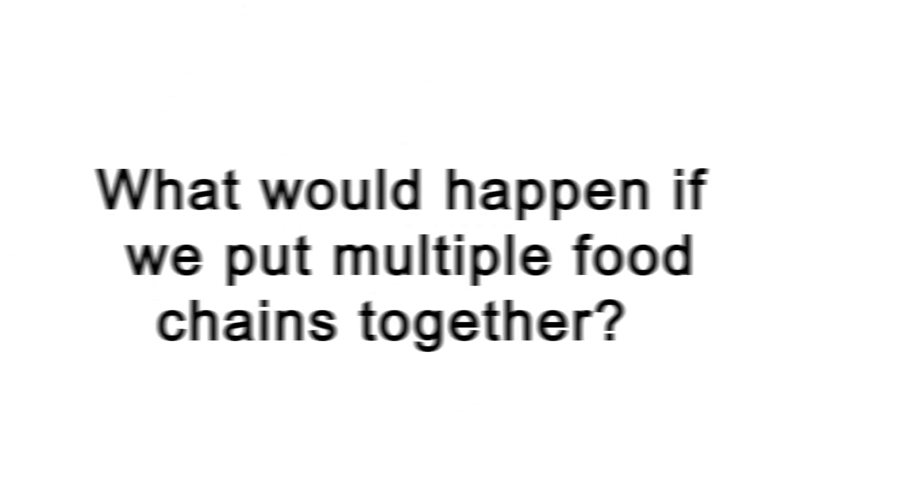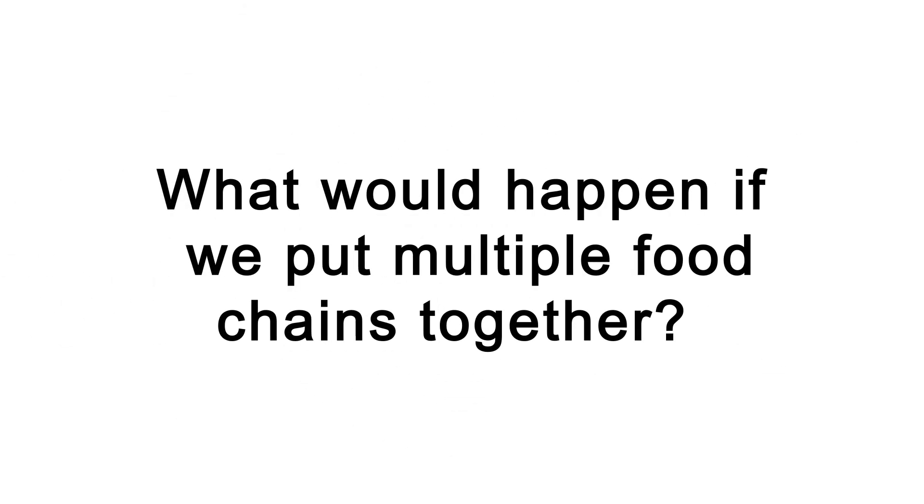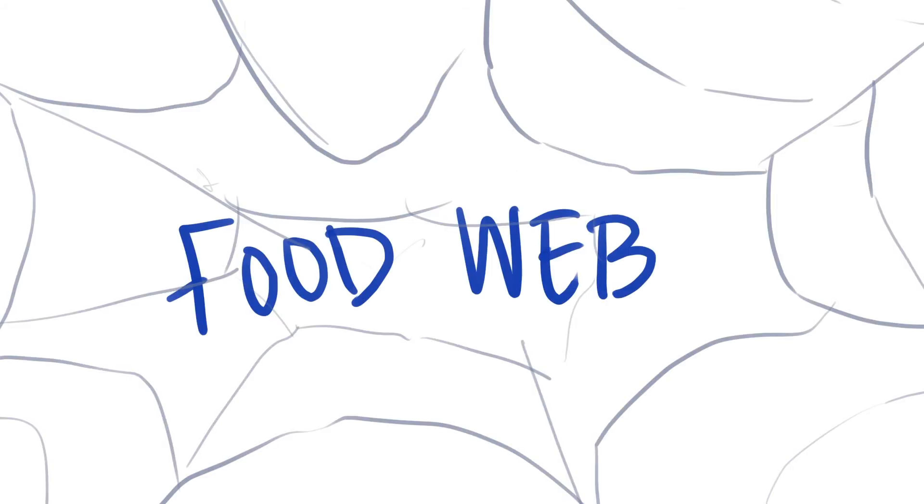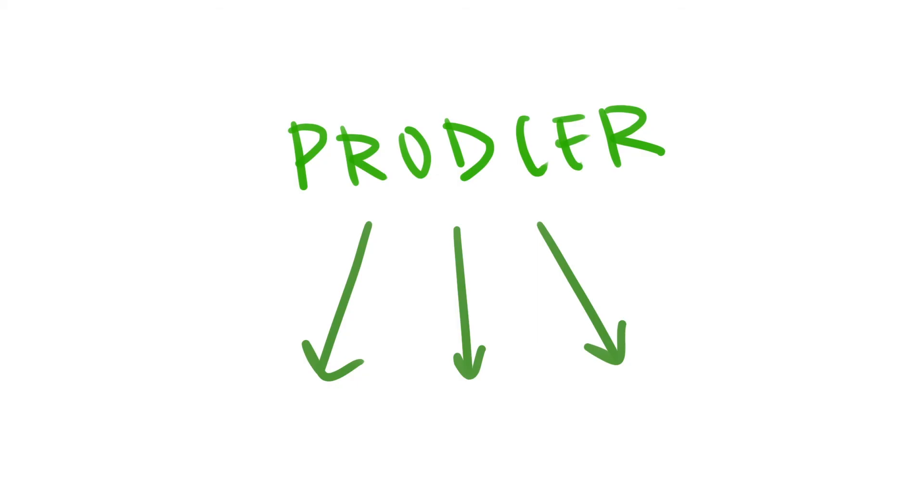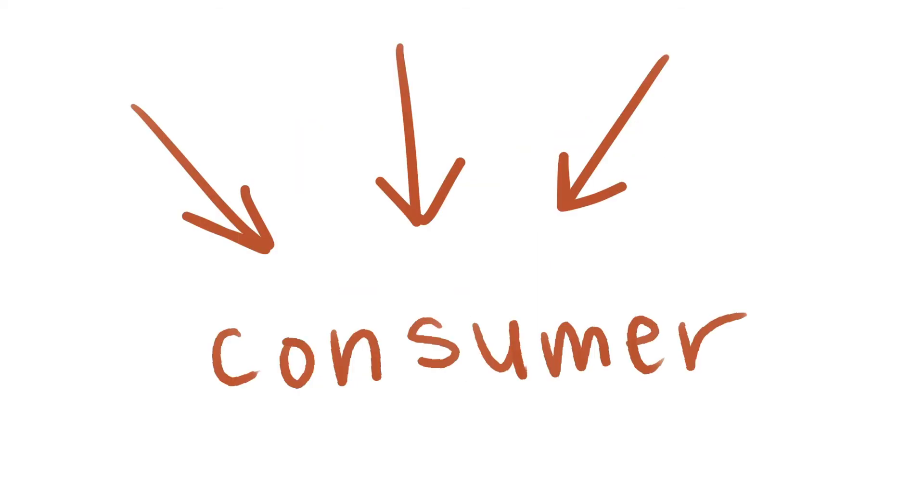So now that we've learned about food chains, take a moment to pause this video and ask yourself, what would happen if we put multiple food chains together? Well, instead of just one chain, you get a food web. This is because a producer can be eaten by multiple consumers, and one consumer can eat many different types of food.